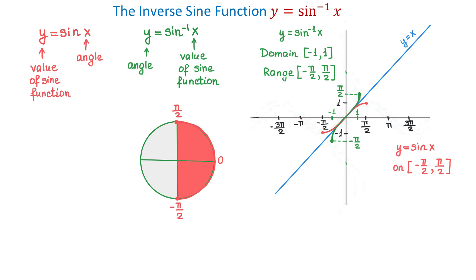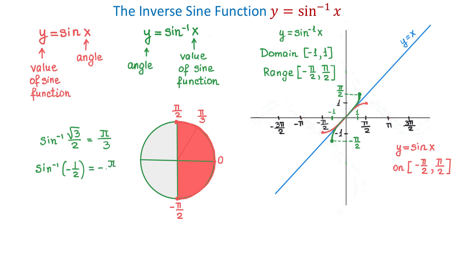For example, if we want to evaluate inverse sine of square root of 3 over 2, we get pi over 3. This angle is in quadrant 1 and is within the interval from negative pi over 2 to positive pi over 2. Next, let's evaluate inverse sine of negative 1 half — using a calculator or the unit circle, we get negative pi over 6.